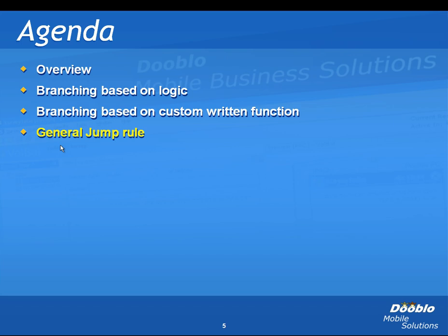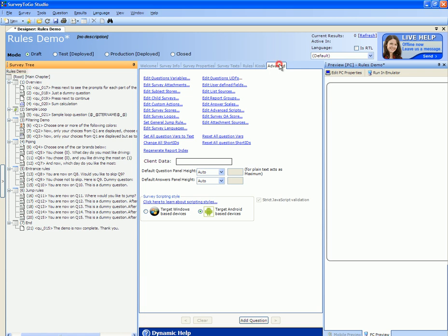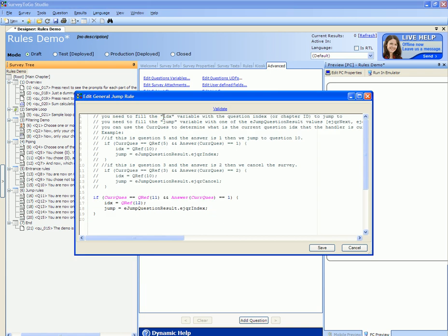Finally, for extreme cases where you have very complex survey routing instructions that are very hard to achieve using individual jump rules, you can use the general jump rule to control the branching of the entire survey from a single custom written functions code block. To access the general jump rule function code library, you click on the survey, click on advanced, and the set general jump rule link. This will bring up the general jump rule script window.